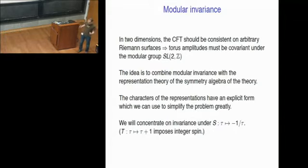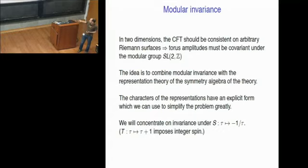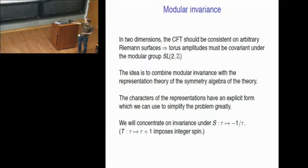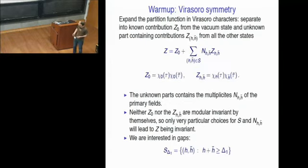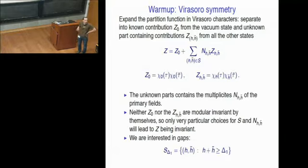We are trying to give a fairly complete story, but we are still only covering a corner of the whole thing. The modular group is generated by two transformations: the S transformation and the T transformation. We'll only consider invariance under the S transformation, essentially because the T transformation is relatively simple to satisfy.